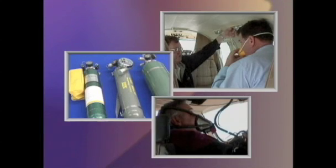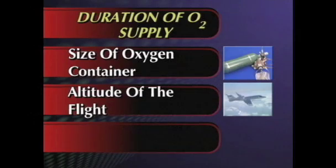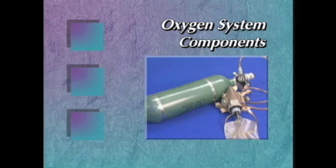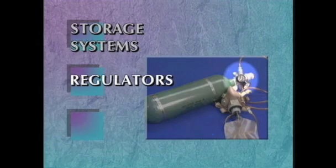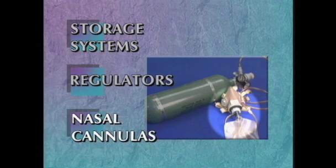Regardless of the type of oxygen system used, duration of oxygen supply depends upon several factors: the size of the oxygen container, the altitude of the flight, and the number of people using the oxygen system. There are three components on most oxygen systems, whether portable or fixed: storage systems, regulators, and oxygen masks or nasal cannulas.